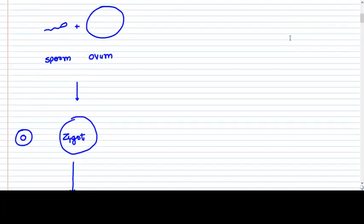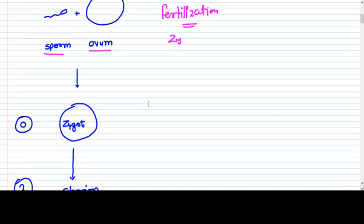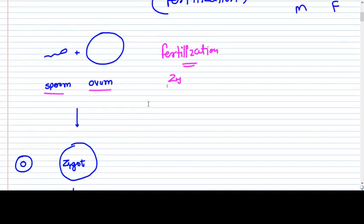First of all, we are going to see what normally happens. All of us know that when the sperm and ovum are joined at fertilization — remember, at fertilization — a zygote is created. The zygote is a fusion of sperm and ovum.